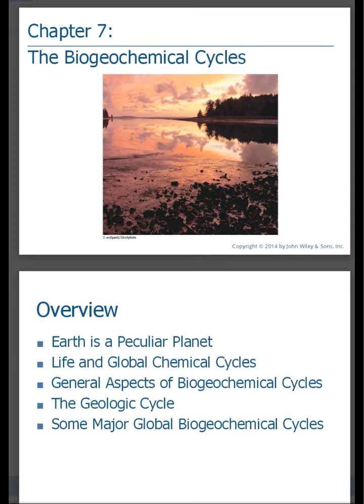In an overview of this chapter we will look at the earth as the unique type of planet in our solar system. We'll also take a look at the life of global chemical cycles and we'll get an overview of biogeochemical cycles, which will involve the geologic cycle and then some of the more major global biogeochemical cycles. We will not cover all possible traces of chemicals throughout the different spheres. We'll concentrate on the main ones.